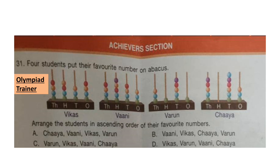Question 31. Four students — Vikas, Vani, Varun, and Chaya — put their favorite number on an abacus. Arrange the students in ascending order of their favorite numbers. Looking at the abacuses: Vikas has 4434, Vani has 4543, Varun has 3151, and Chaya has 5063. In ascending order: Varun, Vikas, Vani, Chaya. The correct answer is option C.